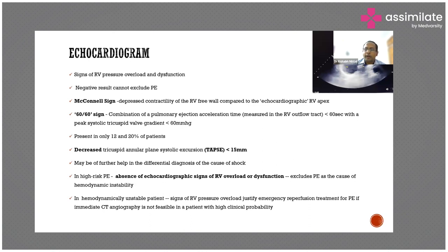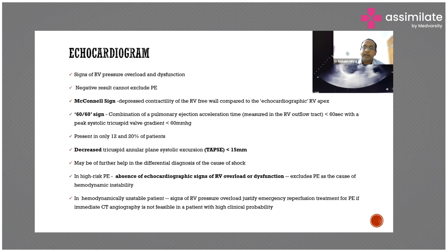Echocardiogram does not rule out pulmonary embolism, but importantly, in a hemodynamically unstable patient, if there is no RV dysfunction, it almost excludes pulmonary embolism as the cause of hemodynamic instability. Because if the patient has become hemodynamically unstable from PE, there must be RV dysfunction based on the pathophysiology, so other causes of hypotension should be investigated.